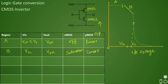Region C: the input voltage is at VTH and both transistors are on. This is also called the switching region. At this point, the output voltage is also VT and both transistors are in saturation.